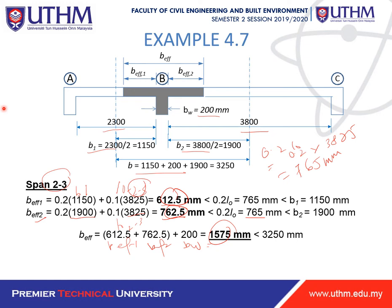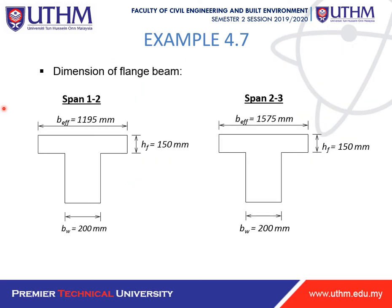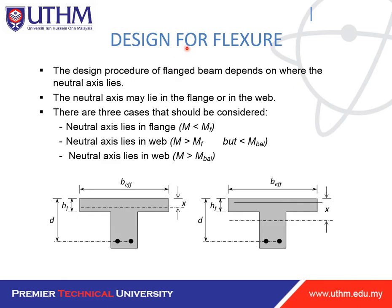For span 2-3, the T-beam section has b_eff = 1575 mm and b_w = 200 mm. This is how we calculate the effective flange width for flange beams. Now let's move to the design procedure. The design of a flange beam depends on where the neutral axis lies — either within the flange or in the web — and there are three cases to consider.